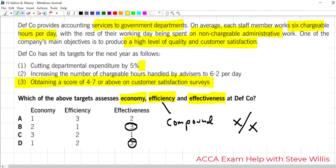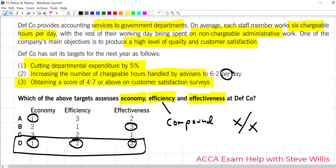Cutting expenditure by five percent. That's going to be economy. So, one is going to be here or here. Looks like we could already get the answer, couldn't we? Now, last one. Increasing number of chargeable hours handled by advisors to 6.2 per day. We're mixing two things. Hours and days. That means it's compound. That is the efficiency metric. Answer is D.